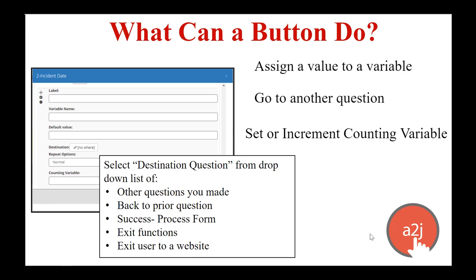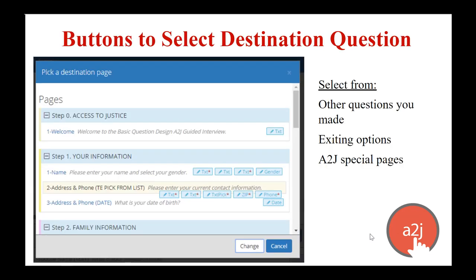When you select a destination question, the pop-up drop-down list will include other questions you've made, 'back to prior question' which is a special A to J button, 'success process form' which should be used only once at the end of the interview as the get-my-document or submit button, and a couple of other exiting functions — one of which will allow you to exit your user to a website if they don't qualify or aren't appropriate to use the form.